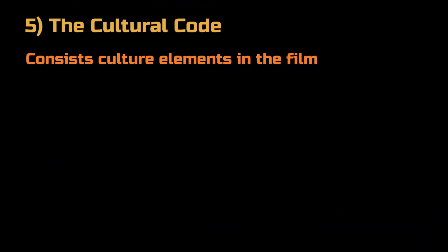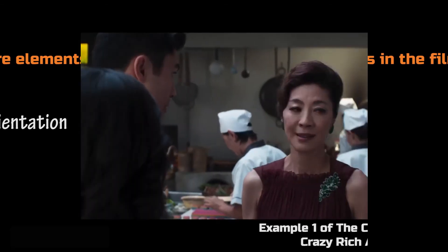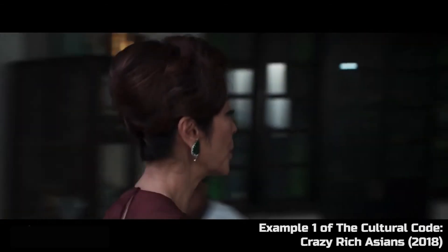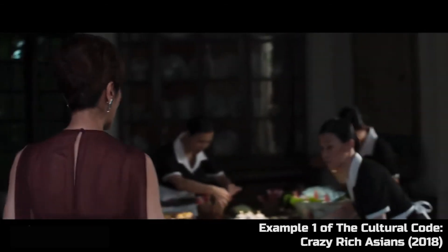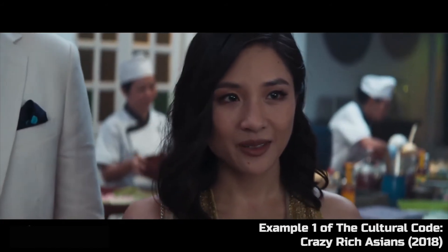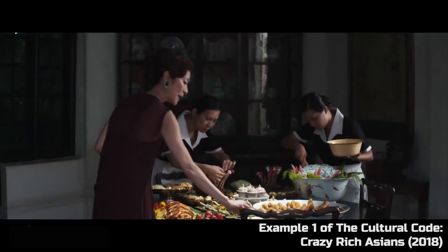Cultural code consists of cultural elements in the film. It can be sexual orientation, religion, nationality, race, and more. Crazy Rich Asians reveals the stereotype that a couple's family background must match with each other.